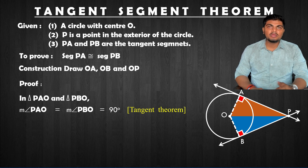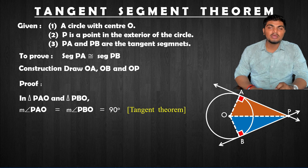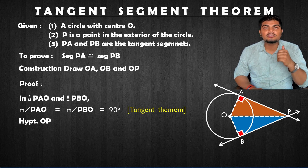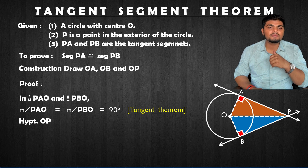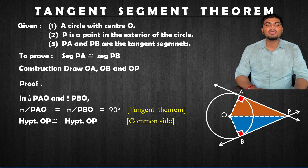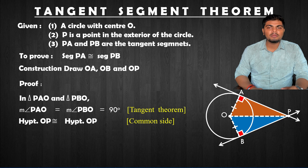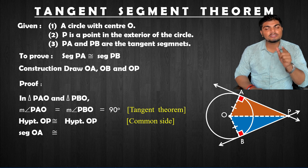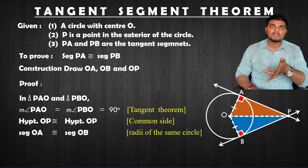I am showing line OP, which is the common side for my two triangles. What is the opposite side? That is my hypotenuse — hypotenuse OP is congruent to hypotenuse OP, the common side. Next I will talk about radius — OA is congruent to segment OB. Why? Radius of the same circle.